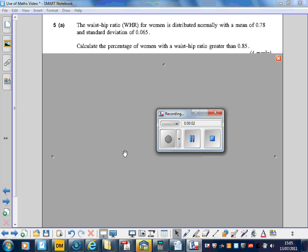Right, question 5. The waist-to-hip ratio for women is distributed normally with a mean of 0.78 and a standard deviation of 0.065.